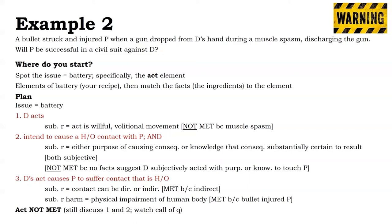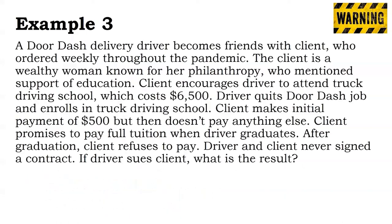For the third element — D's act causes P to suffer contact that is harmful or offensive — contact can be direct or indirect. Here it's met because the contact was indirect. The subrule regarding harm requires physical impairment of the human body, which is met because the bullet injured P. In conclusion, act was not met, but we still discuss elements one and two because of the call of the question, working all the way through unless told otherwise. With this plan, we can just start writing.